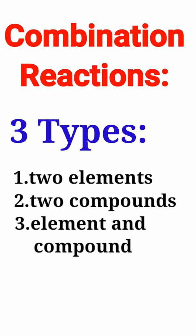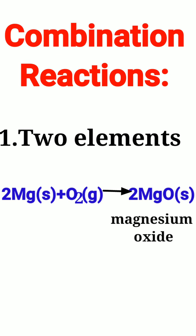First is combination between two elements. Magnesium and oxygen are two elements which combine to give a single product of magnesium oxide.